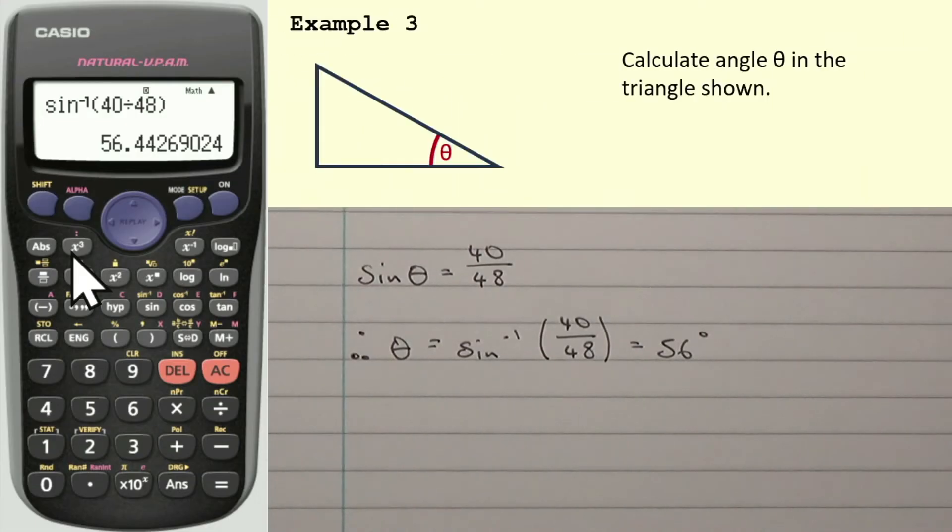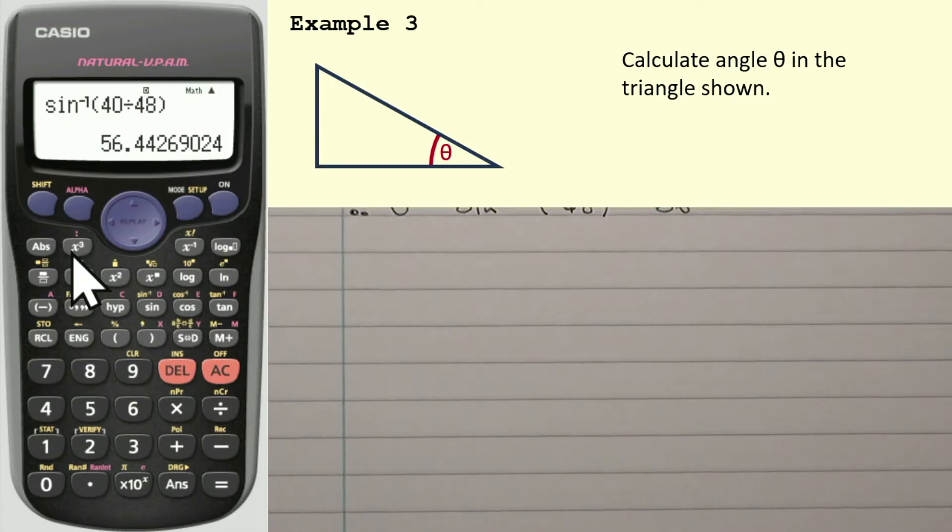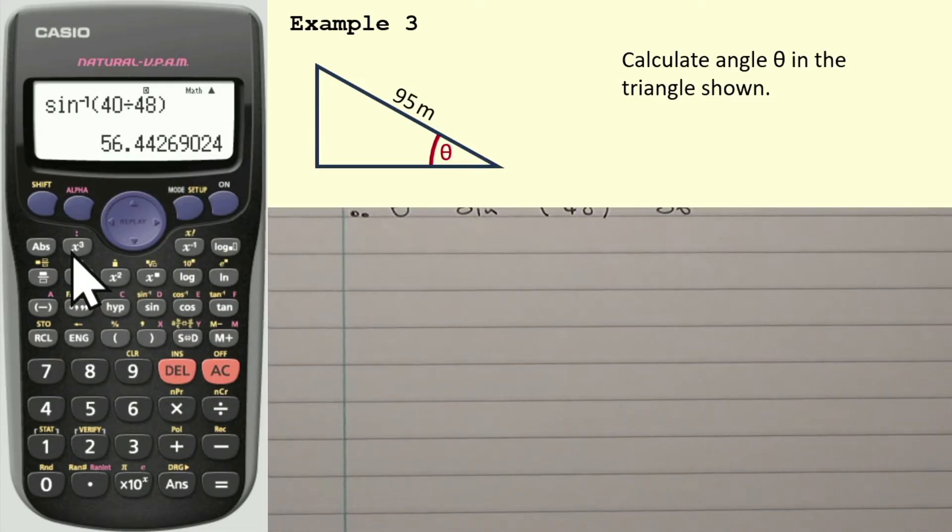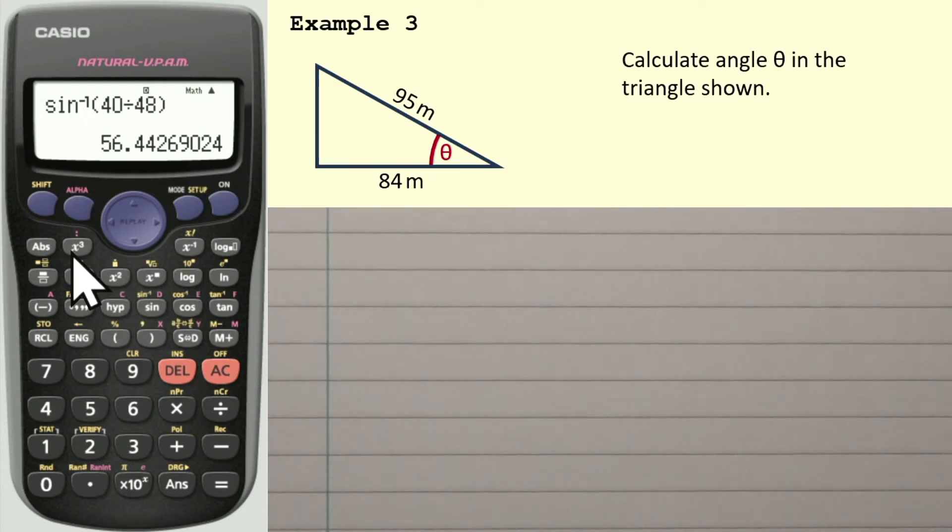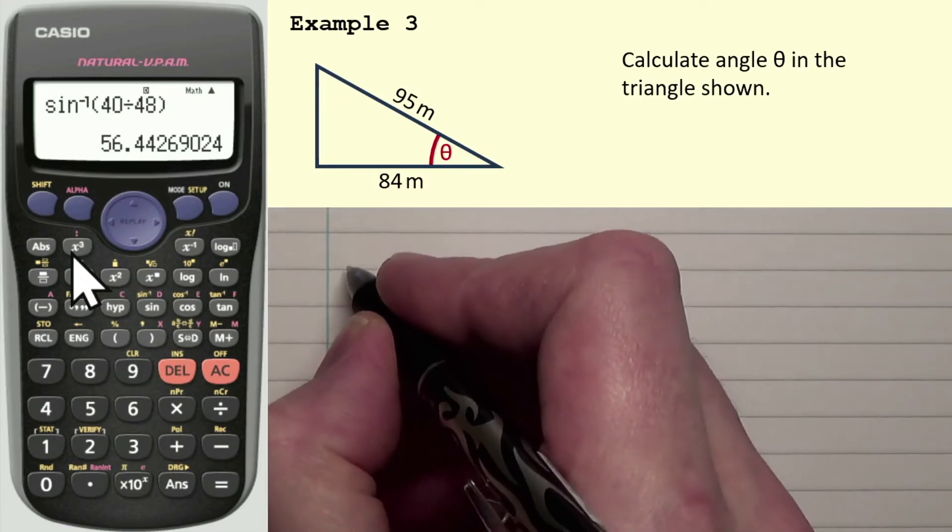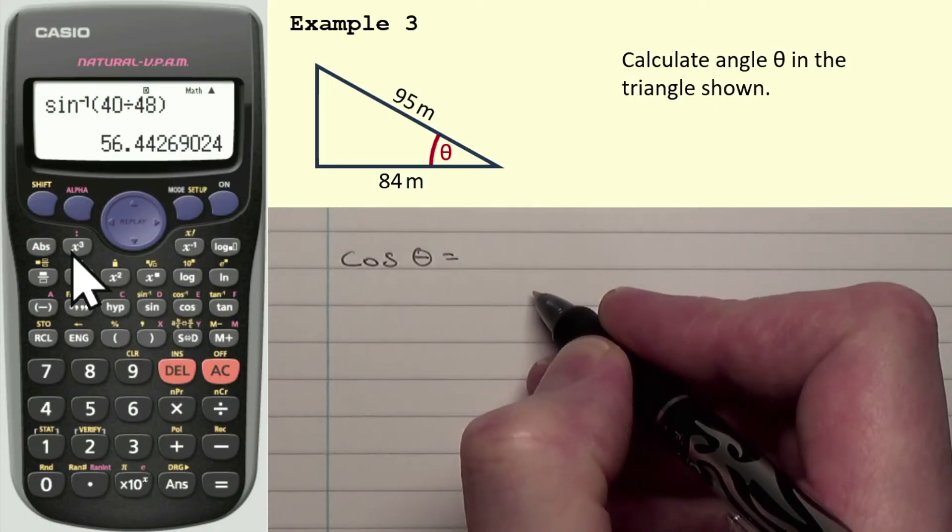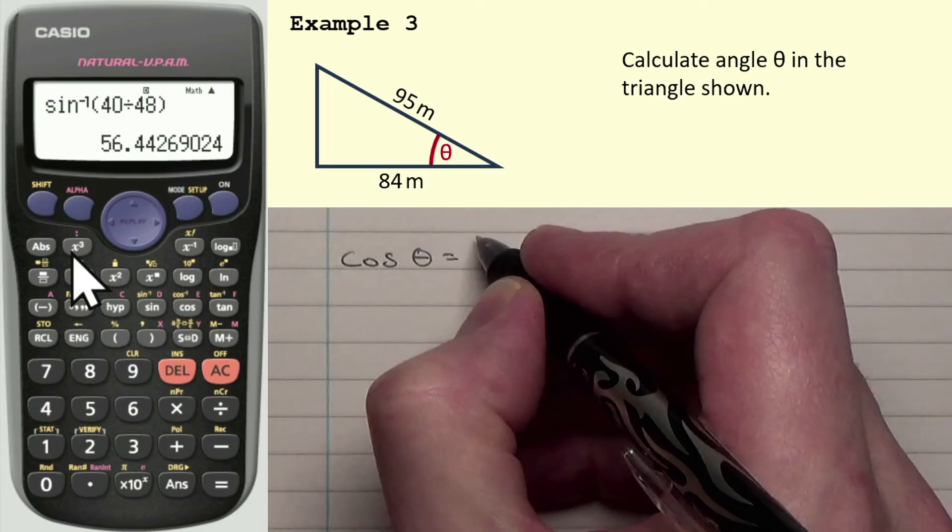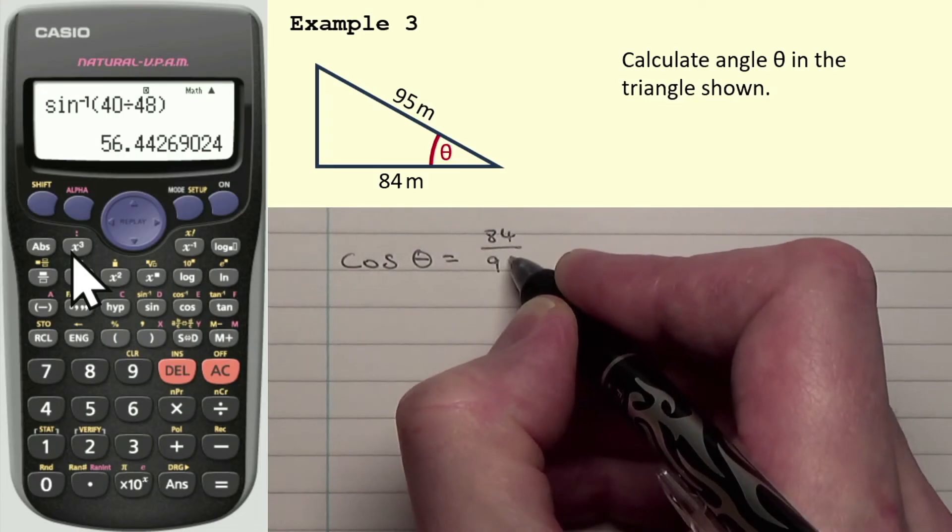The third example looks like so. Now, our two sides are this one here. Obviously, that's the longest side, that's the hypotenuse. And hopefully you can see that that side is the adjacent side. So that would mean what links the adjacent side to the hypotenuse is the cosine function. So cos theta is equal to adjacent over hypotenuse. So that would be 84 over 95.